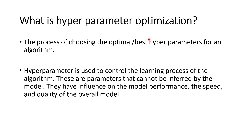So what is hyperparameter tuning or optimization? Hyperparameter optimization is the process of choosing the optimal — the best — hyperparameters for an algorithm. It's mostly used to control the learning process of the algorithm, and these are the parameters that cannot be inferred by the model. They do have influence over the model's performance, speed, and overall quality.